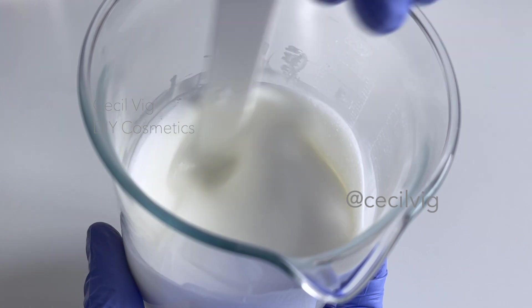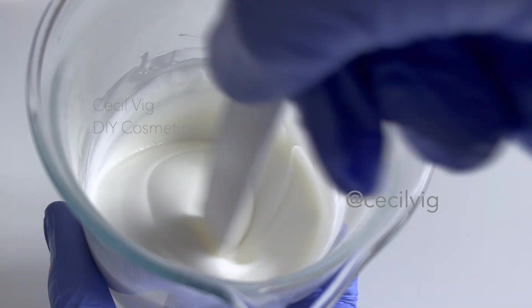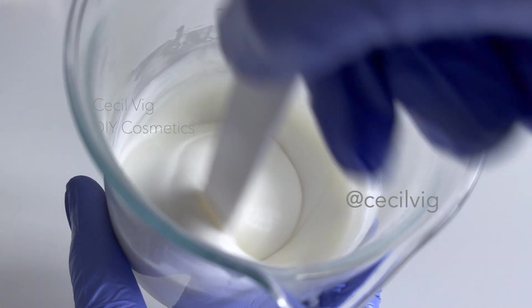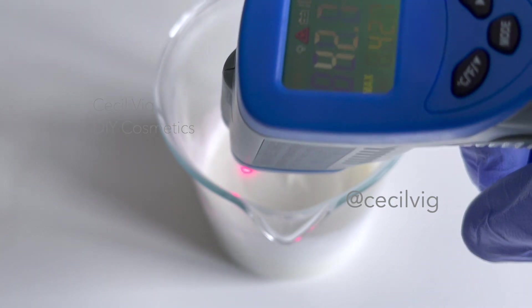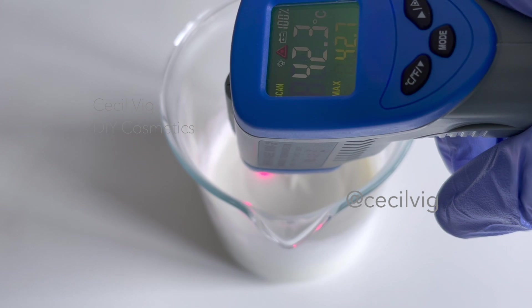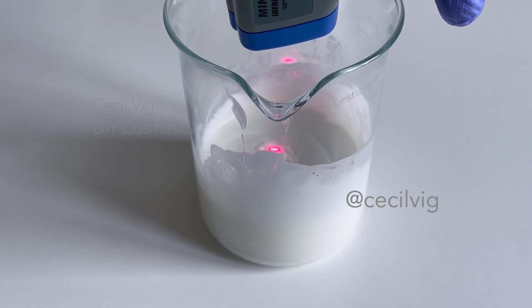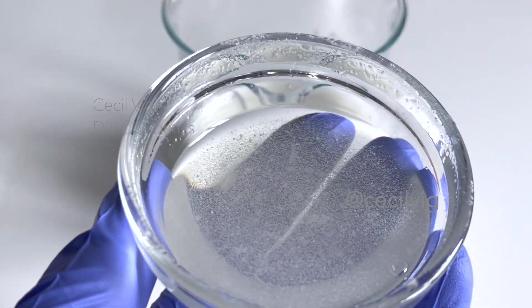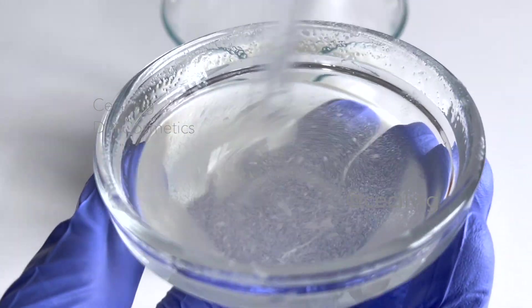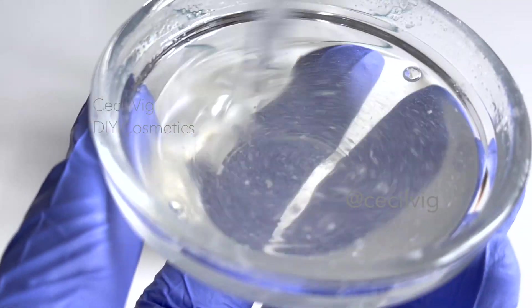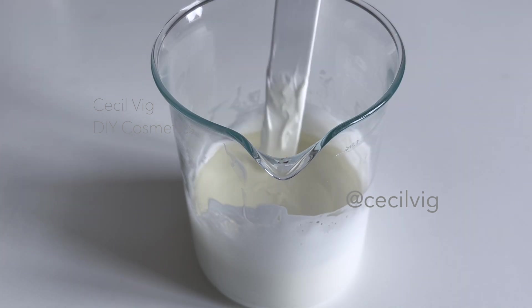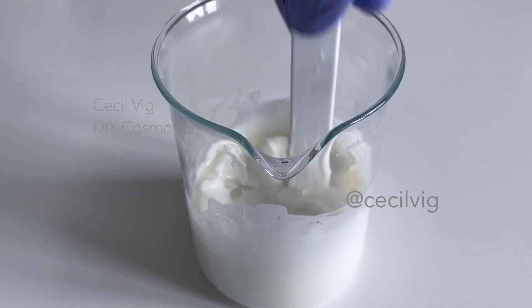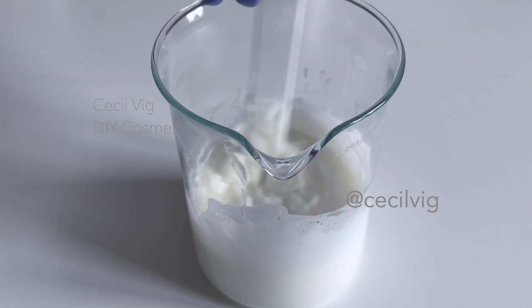Then with a spatula until the mixture becomes thick. When the temperature is around 40 degrees Celsius, we can start adding in the heat sensitive ingredients. As you can see, the niacinamide and N-acetylglucosamine has fully dissolved. We add the mixture to the cream and mix well. Mix until the consistency becomes smooth and creamy.